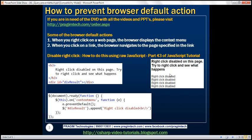Here is what we want to do. We have a page with some text on it. Every time we right-click on this page, we don't want the context menu to appear, and we want to display a message saying 'right-click disabled'. So we want to do this every time we right-click on the page.